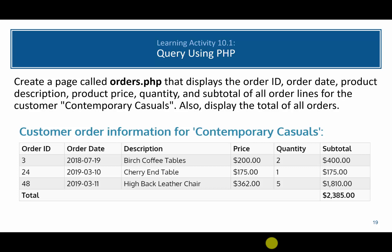In this video we're going to create a new PHP page called orders.php. This page will display the order ID, the order date, the description, the price, the quantity, the subtotal, and the total for all orders that were placed by the customer Contemporary Casuals.